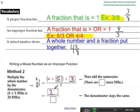So that's going to be 23 over 5. So there are 23 more fifths.